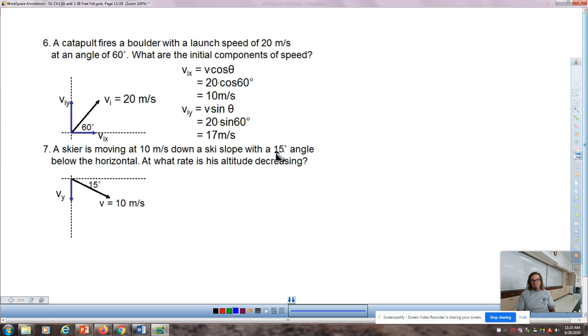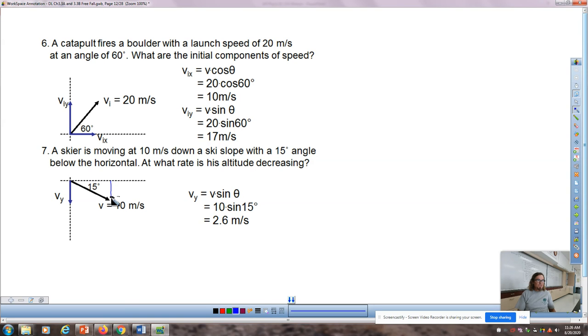A skier is moving at 10 meters per second down a ski slope with a 15 degree angle below the horizontal. At what rate is his altitude decreasing? We want to know what is this speed, how quickly are you getting down the mountain vertically. We want to know what the Y component of that velocity is. The Y component, if you moved it into the estimated triangle, would be the side opposite of the 15 degree angle. So I use sine. You might notice, and this is true all the way through the end of Chapter 4, that the Y component always gets sine and the X component always gets cosine. In Chapter 5, when we're learning forces, that doesn't always happen.